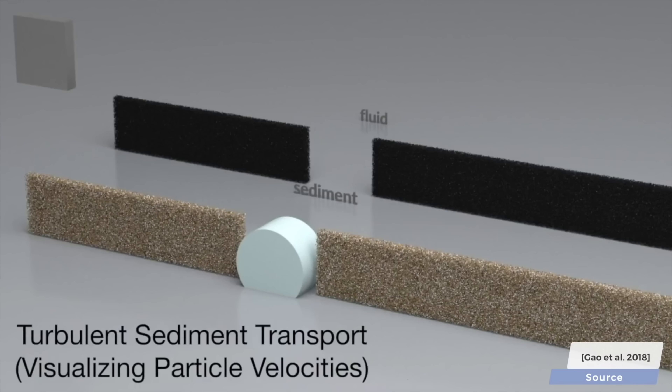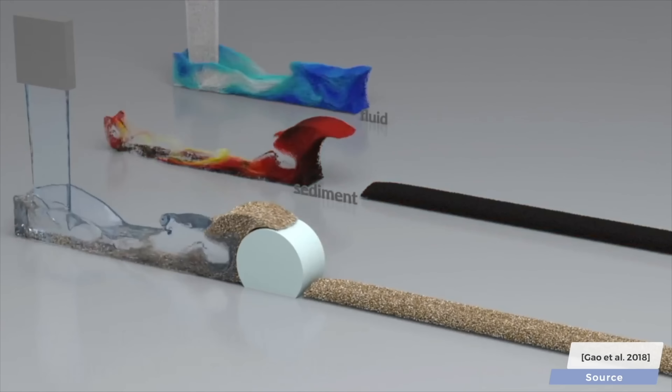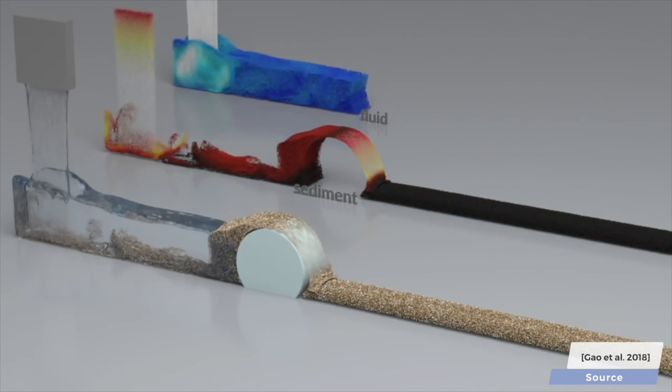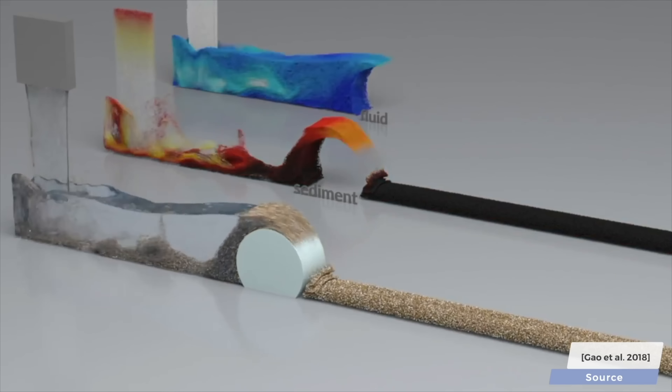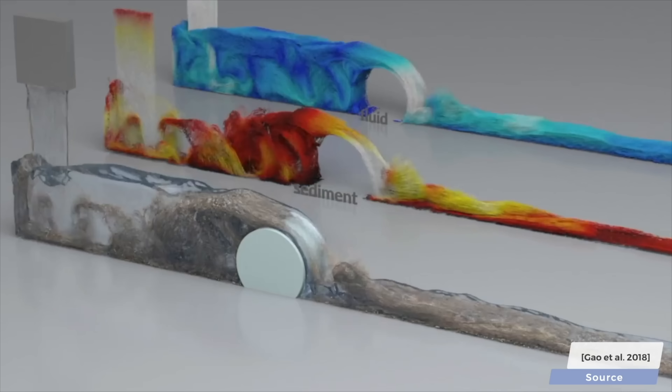This means that the sand is allowed to have an effect on the fluid, but at the same time, as the fluid sloshes around, it also moves the sand particles within. This is what we refer to as two-way coupling.